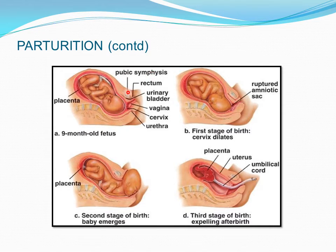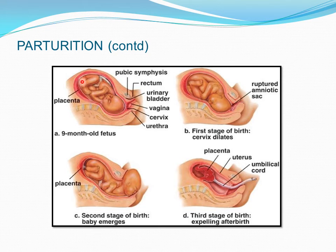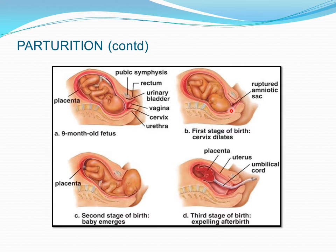In the diagram, we can also identify the pubic symphysis, rectum, urinary bladder, vagina, and at the base, the placenta. In the first stage of birth, the cervix dilates and as it opens, the amniotic sac ruptures and the amniotic fluid flows out through the vagina.